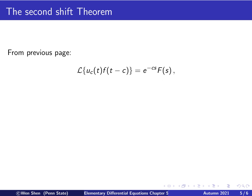So we have that the Laplace transform of g equals e to the negative cs times F of s, which is the Laplace transform of f of t. This is the very important second shift theorem: the Laplace transform of a function f shifted by c units in the t space equals the transform F of s multiplied by the exponential e to the negative cs, where c is the shift amount.